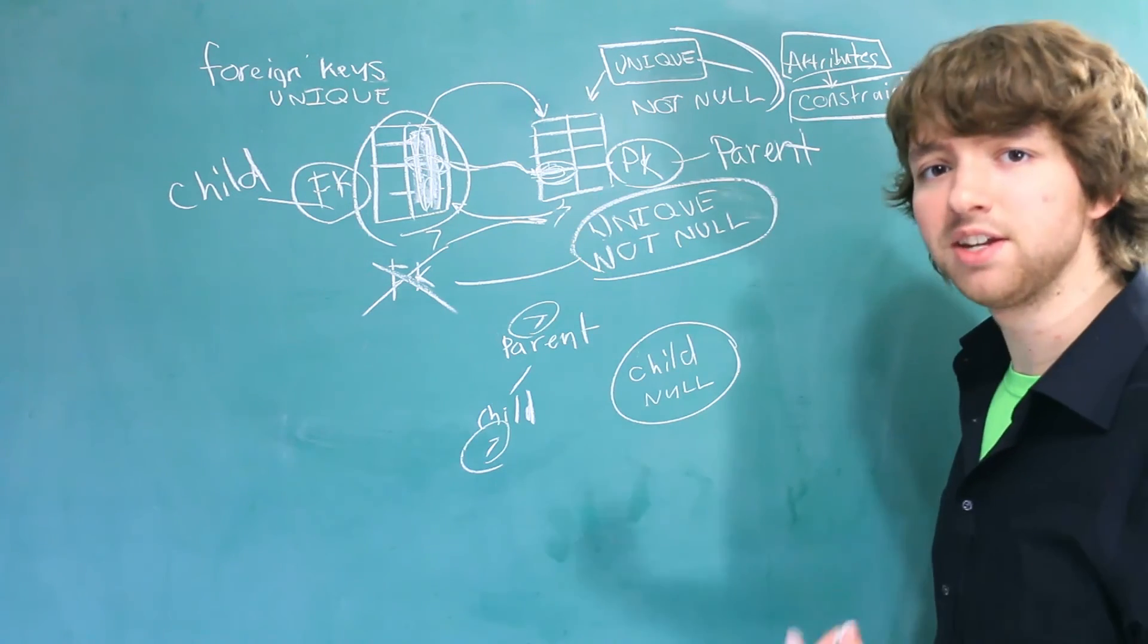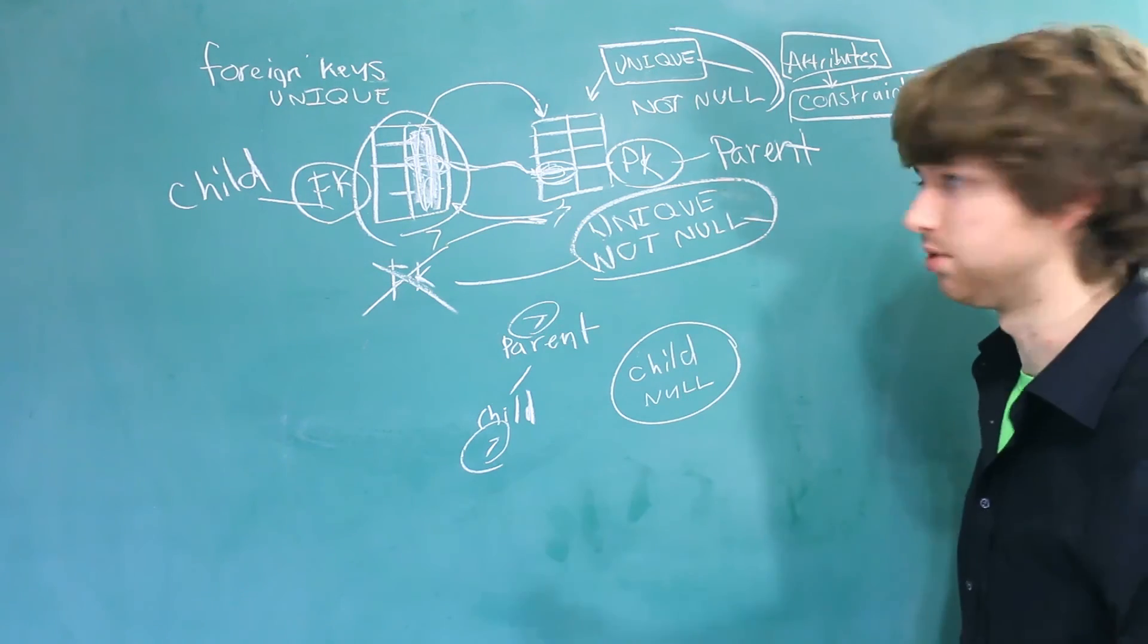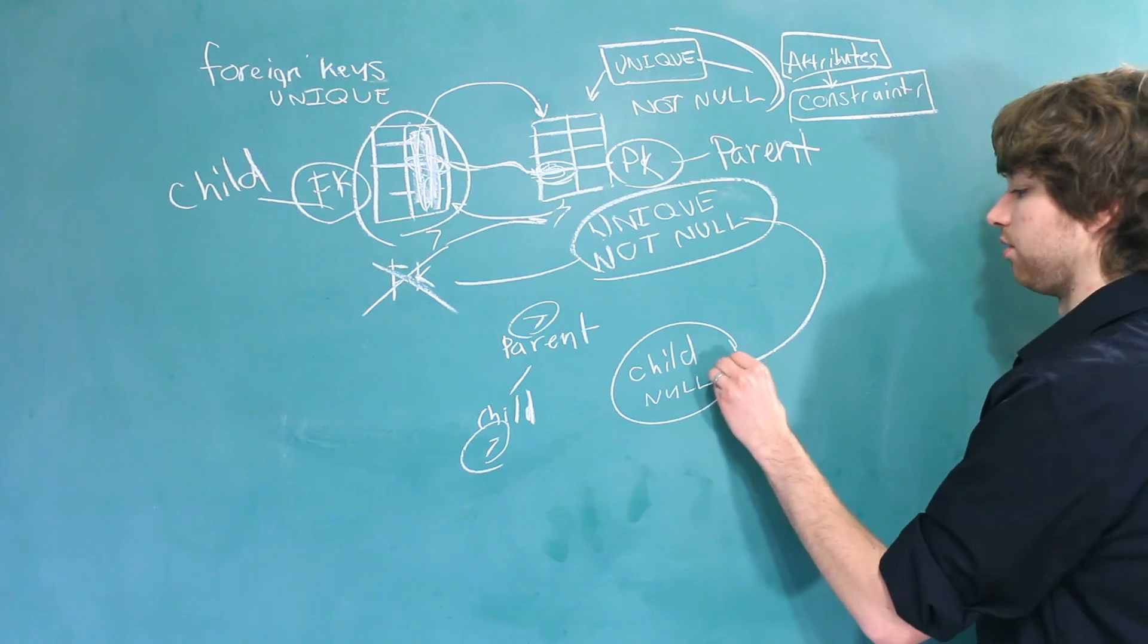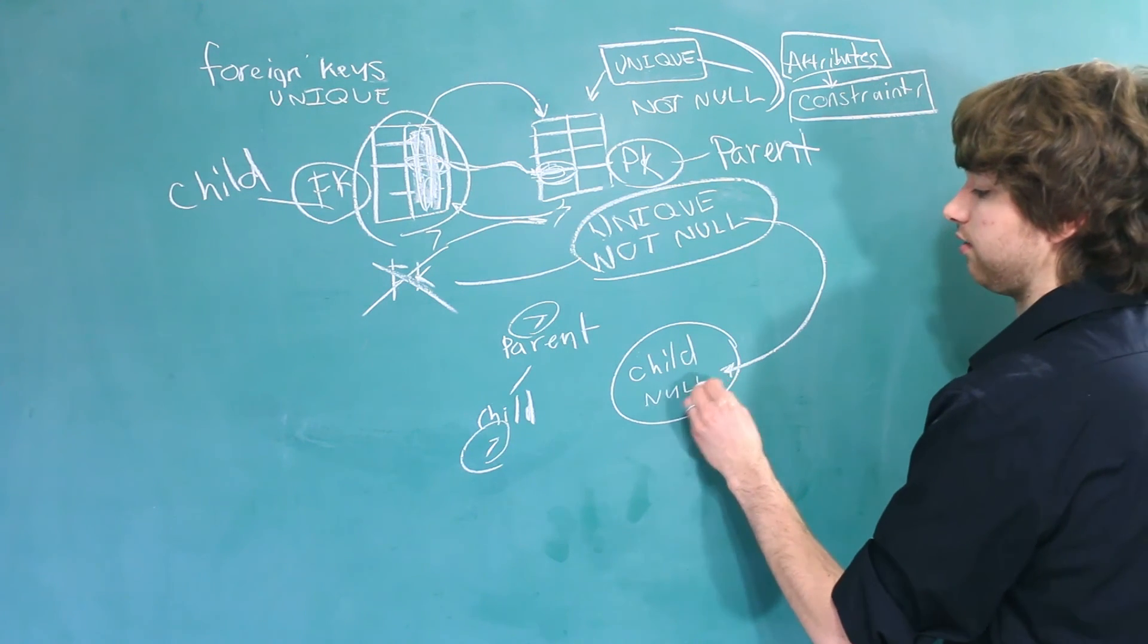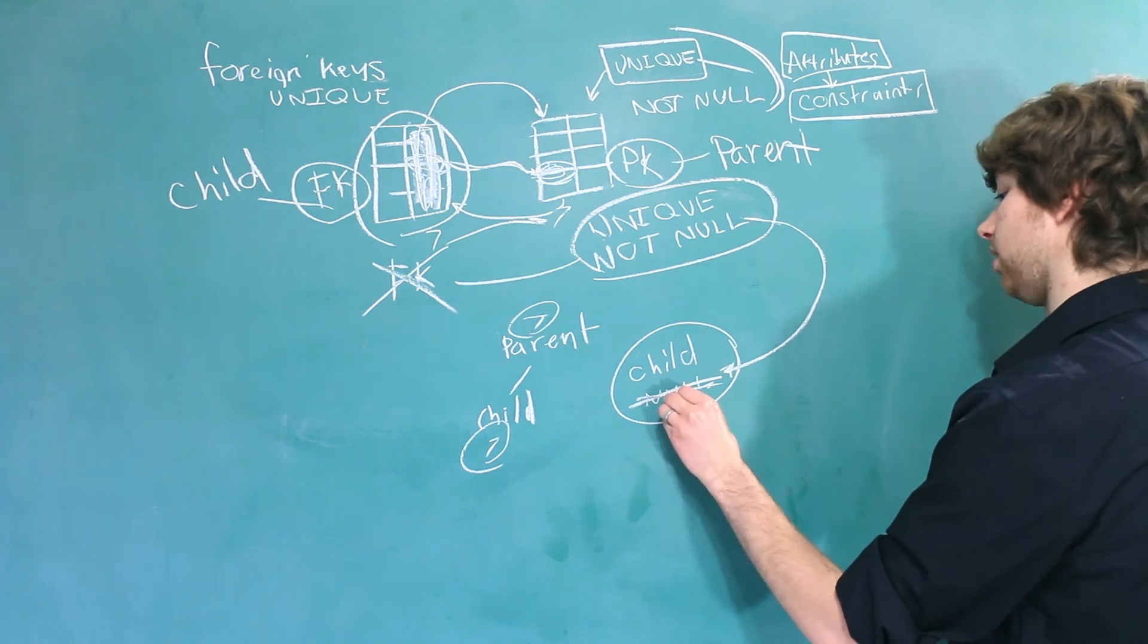If you don't like that idea though, and you don't want no orphaned children, you can use the not null constraint or attribute. And essentially that is going to force this child to have some value for the foreign key. So you could not use null. You have to say some value.